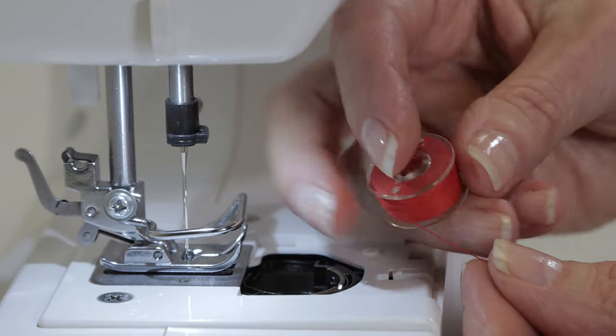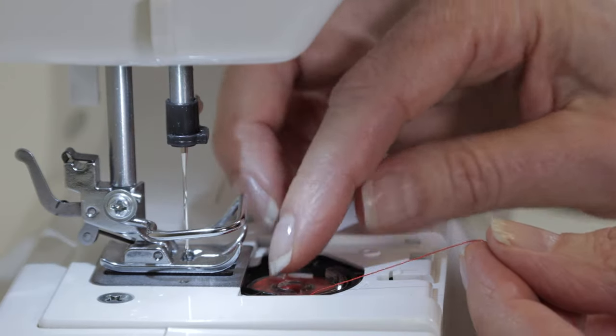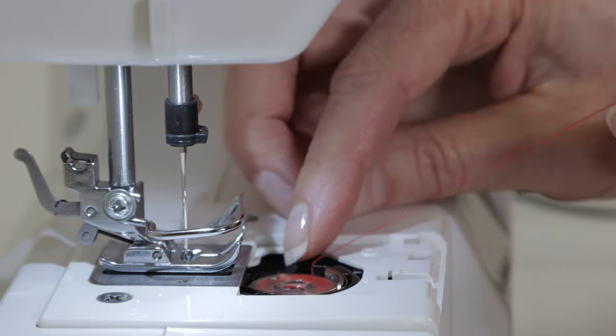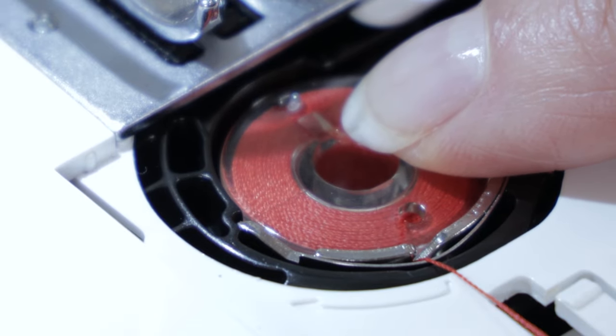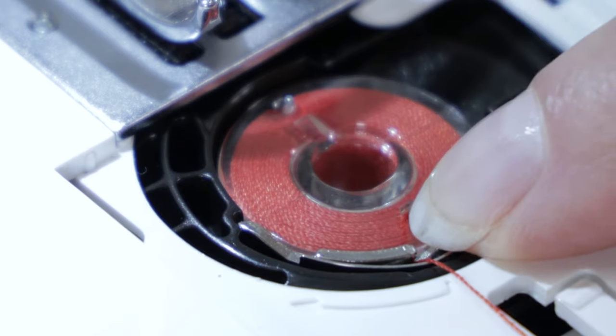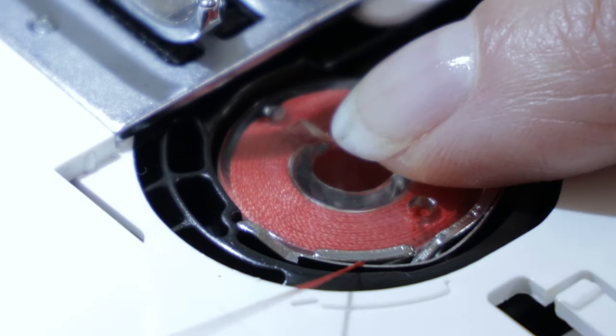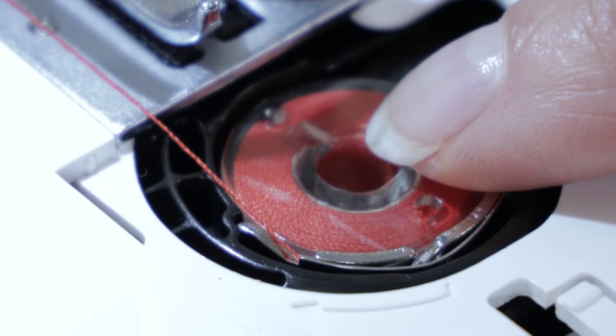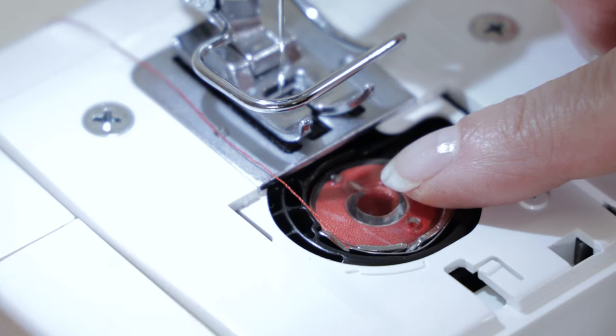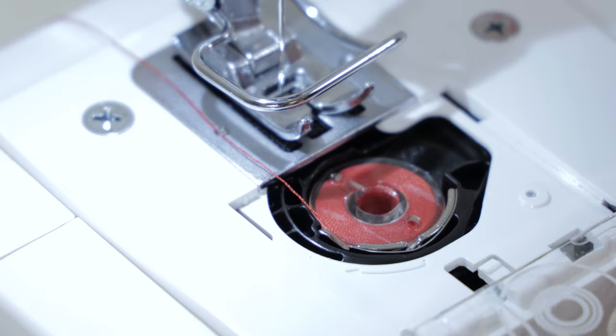So we're going to lay the bobbin in the bobbin holder and bring the thread around, and keep a finger lightly on top of the bobbin as you slip the thread into this first guide. And then bring it around and lay it in this second guide here. You can just let the thread rest to the back for now and replace the cover.